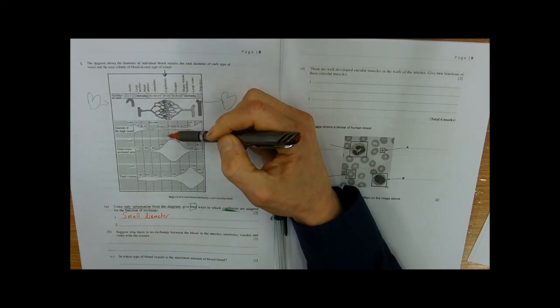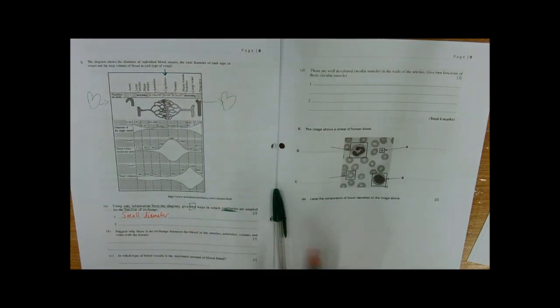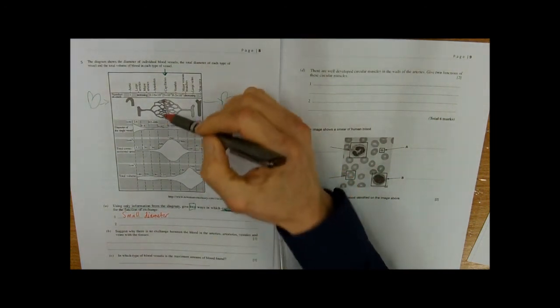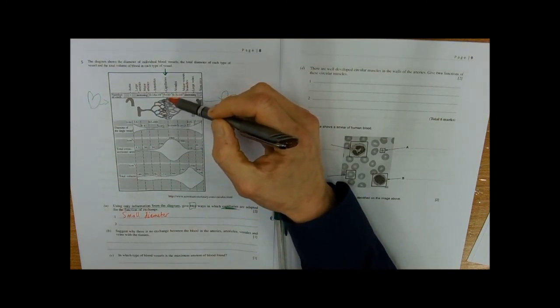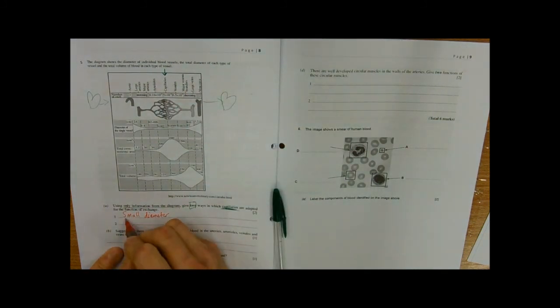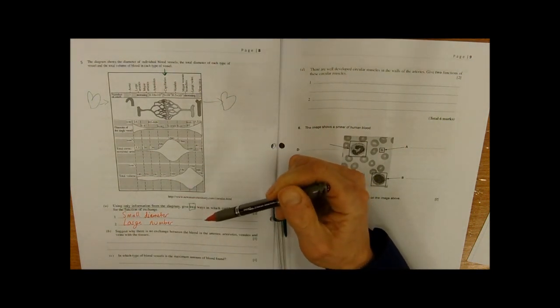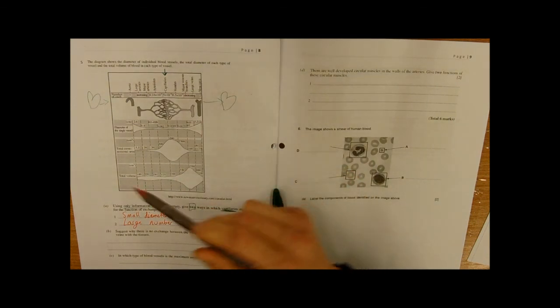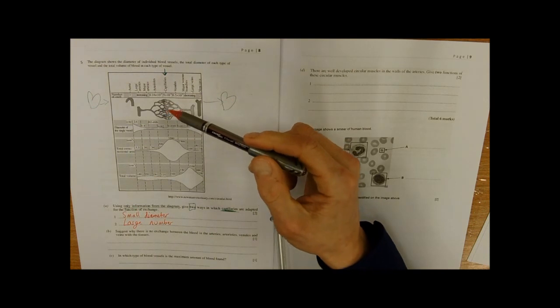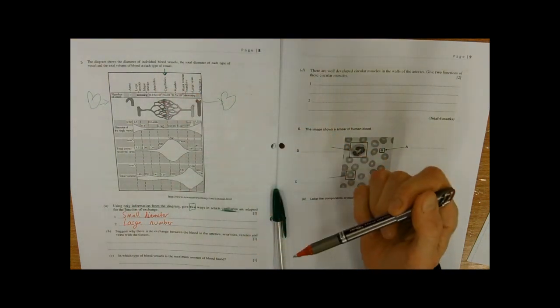Let's start at the top there. There's more of them, so there's a large number of them. It's not really wanting you to explain anything, it just says give two ways. It's just testing whether you can use your AO2 skills in reading the information in a slightly different format.